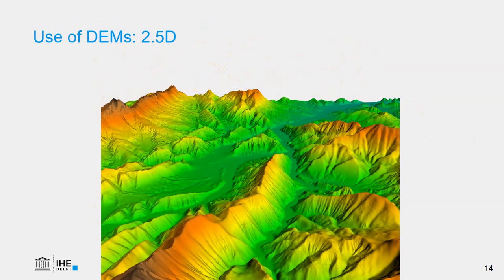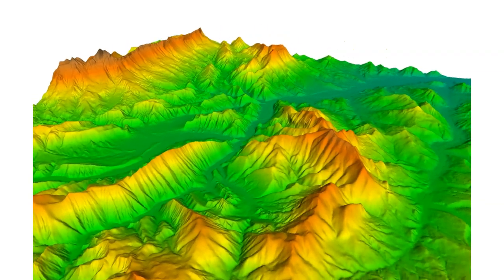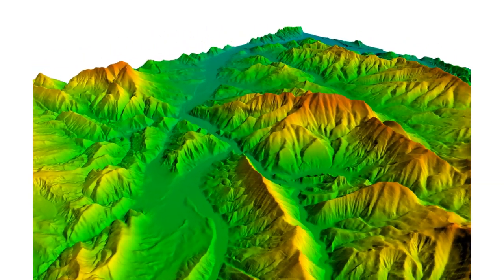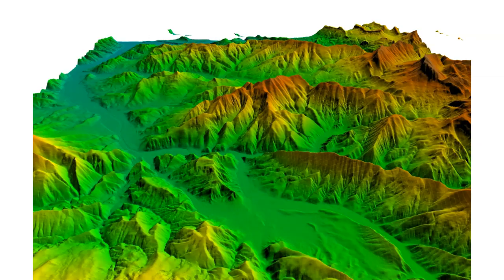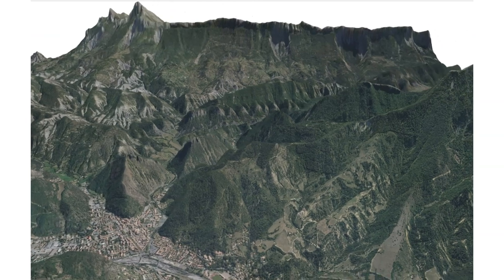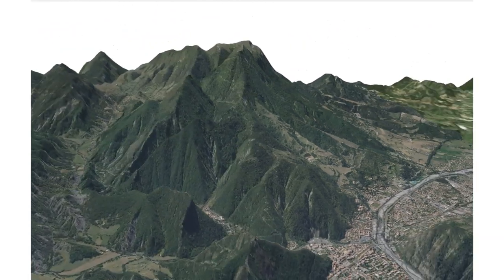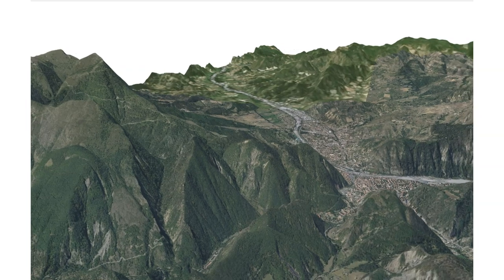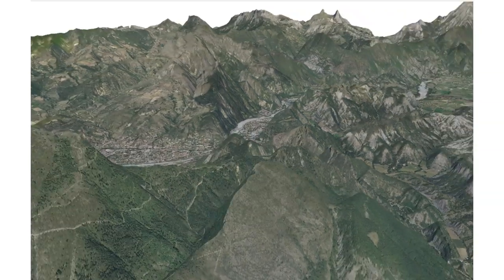We can also visualize elevation in so-called 2.5D. It's not real 3D, because that requires special devices, but a 3D effect is created by perspective and shading. In a GIS we can also visualize this in animations, which gives further insight into the study area. We can also drape an orthophoto or satellite image over the DEM, as in this animation of the area around Digne-les-Bains, where we can further interpret the geomorphology for hydrological applications.